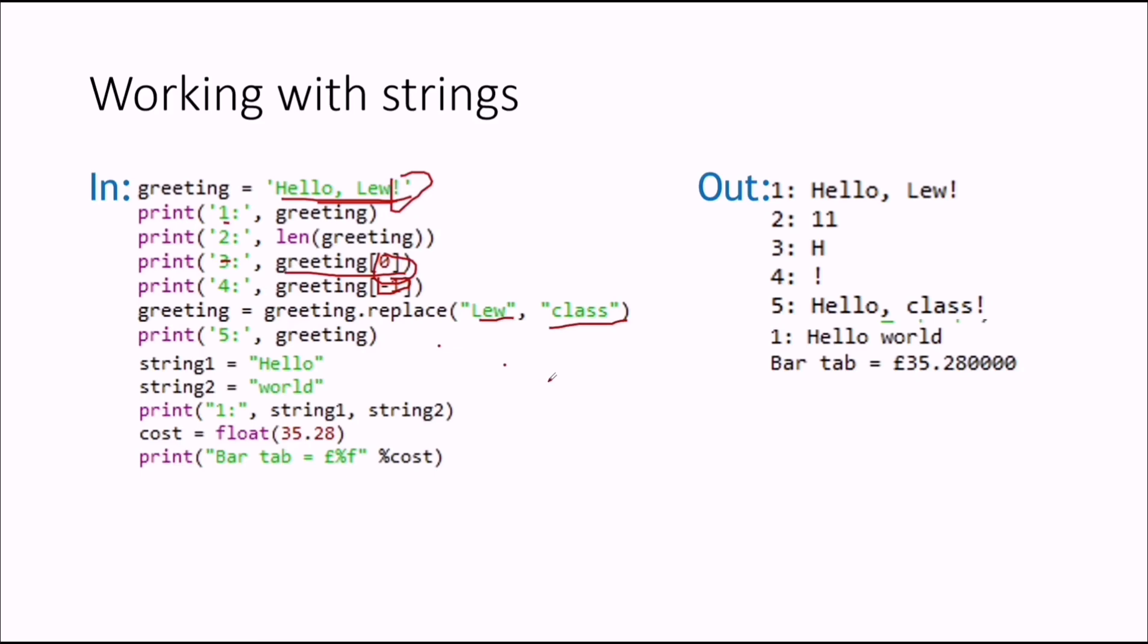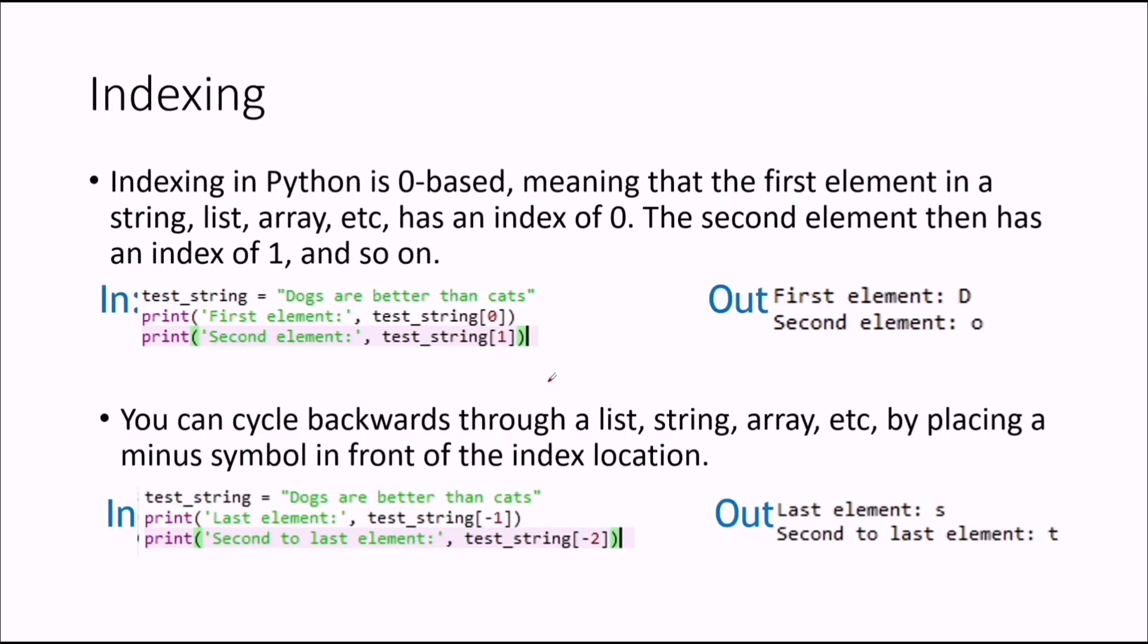The next step is indexing. As I already told you, indexing starts with zero in almost all programming languages. For the first character of our string, we provided index zero, and it outputs the first element. The first character of our string is displayed. That's the end, I hope you understand.